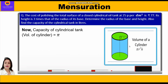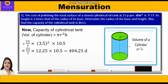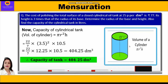Now we calculate the capacity, which is the volume of the cylinder: V = πr²h. Substituting the values: V = (22/7) × (3.5)² × 10.5 = (22/7) × 12.25 × 10.5 = 404.25 dm³.